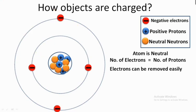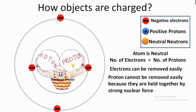Electrons revolve around the atom and are held by electrostatic attraction between positive and negative charges. These electrons can be easily removed because they are at a far distance — electrostatic force decreases with distance. However, protons cannot be removed easily because they are held together by strong nuclear force, which is stronger than electrostatic force. So removing a proton requires a lot of energy.